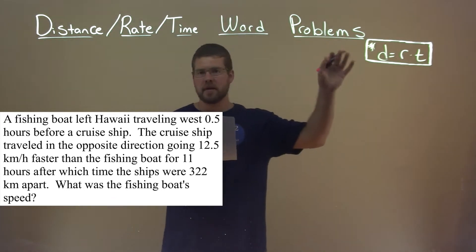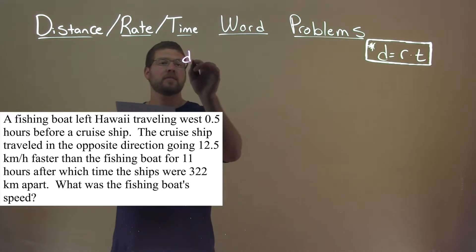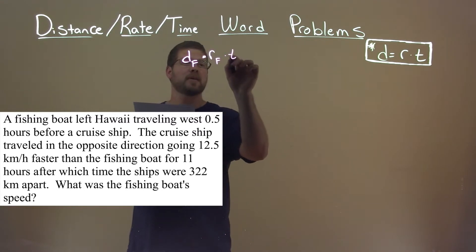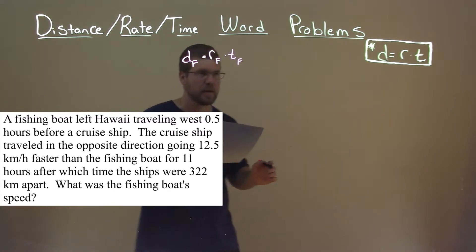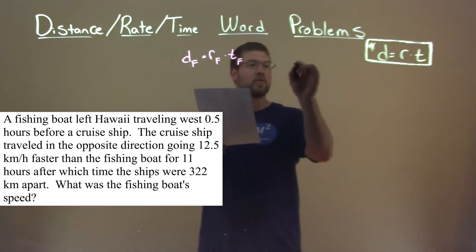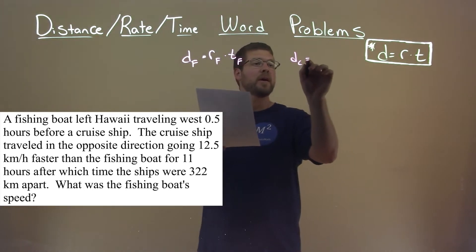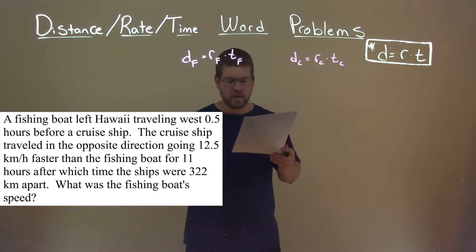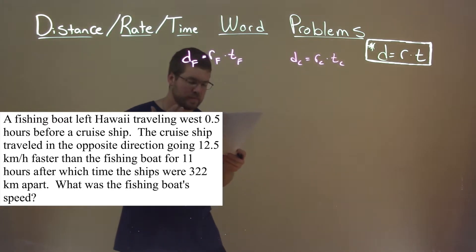Okay, well, we'll start with distance equals rate times time for each one. Distance of the fishing boat is equal to the rate of the fishing boat times the time of the fishing boat. And the same thing with the cruise ship. Distance of the cruise ship is equal to the rate of the cruise ship times the time of the cruise ship. So, let's plug in what we know.